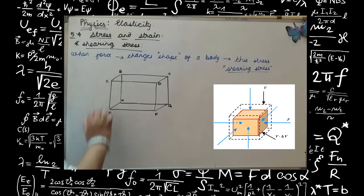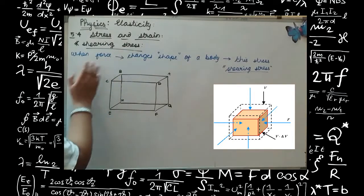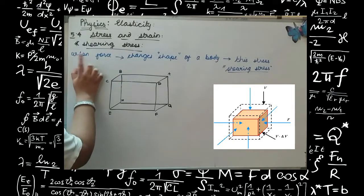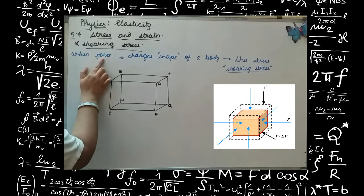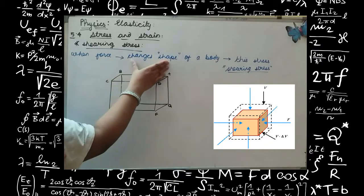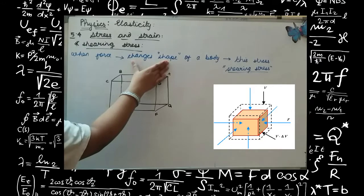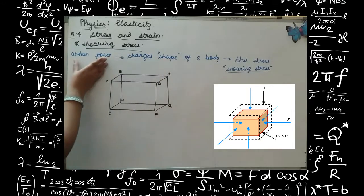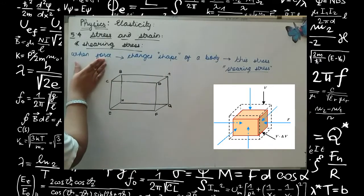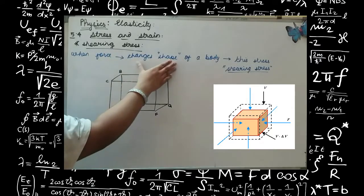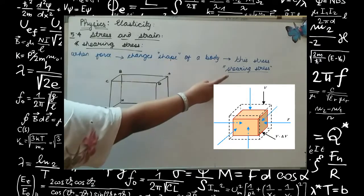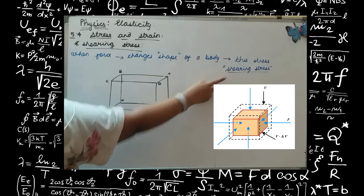Now we will learn about shearing stress. Shearing stress is the applied force which changes the shape of the body. This force is a deforming force — a force which leads to some change — and it changes the shape of the body. This is known as shearing stress.